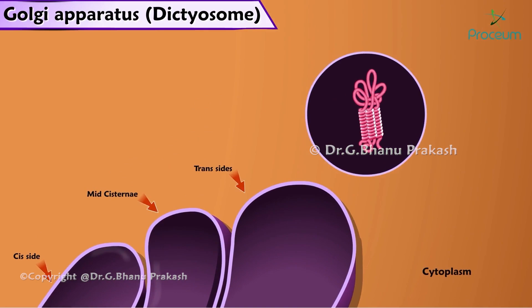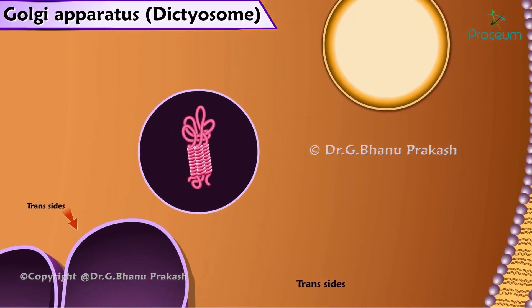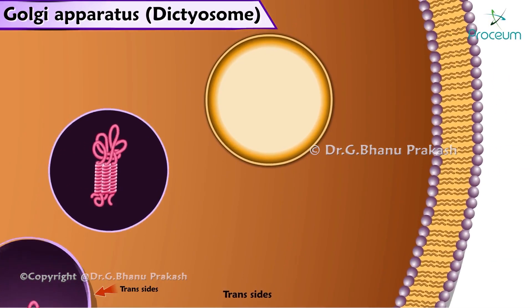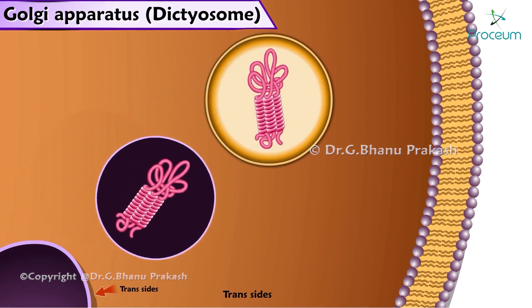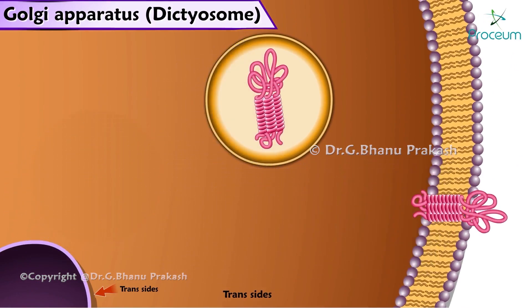From the trans side of the Golgi apparatus, vesicles are detached and sent towards the lysosomes and cell membrane by exocytosis, and membrane proteins are recycled from the plasma membrane by endocytosis.